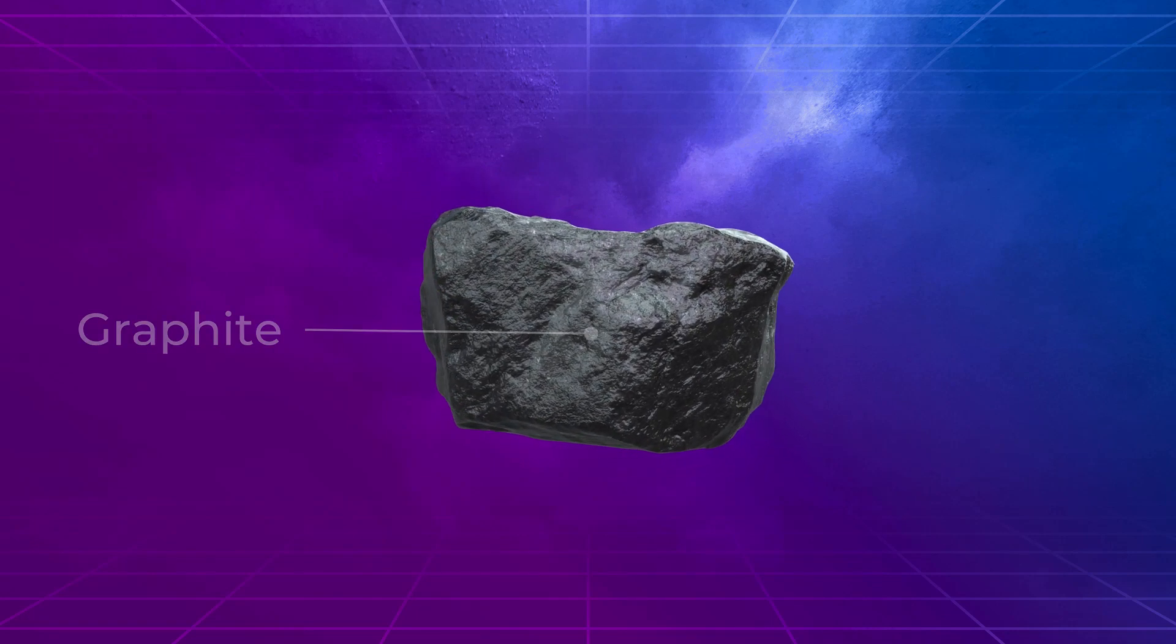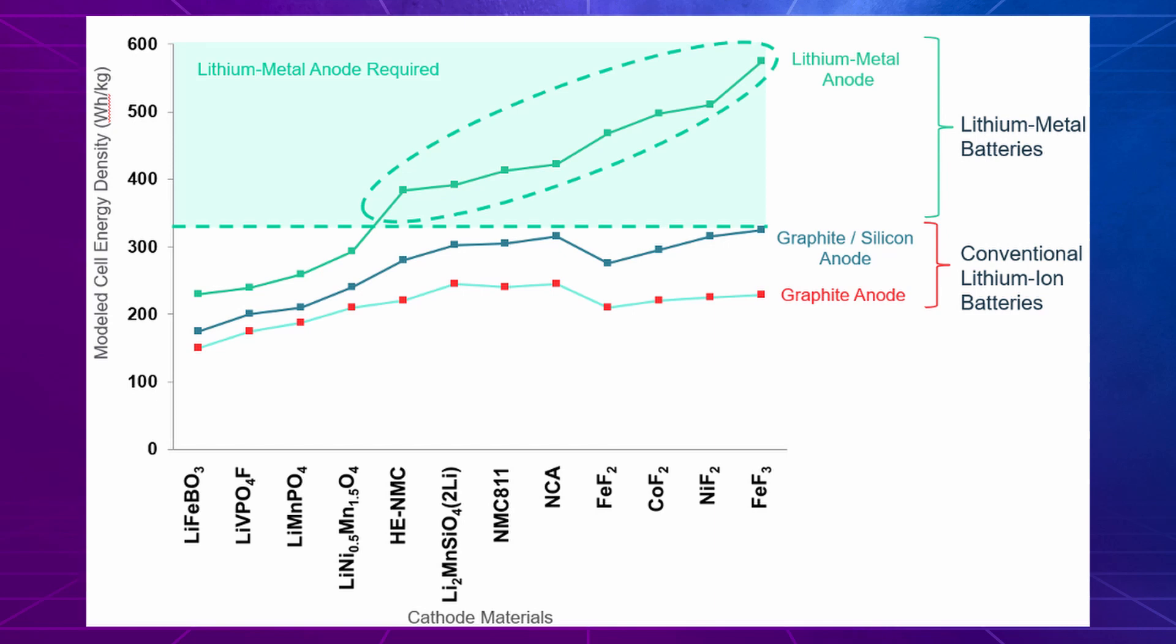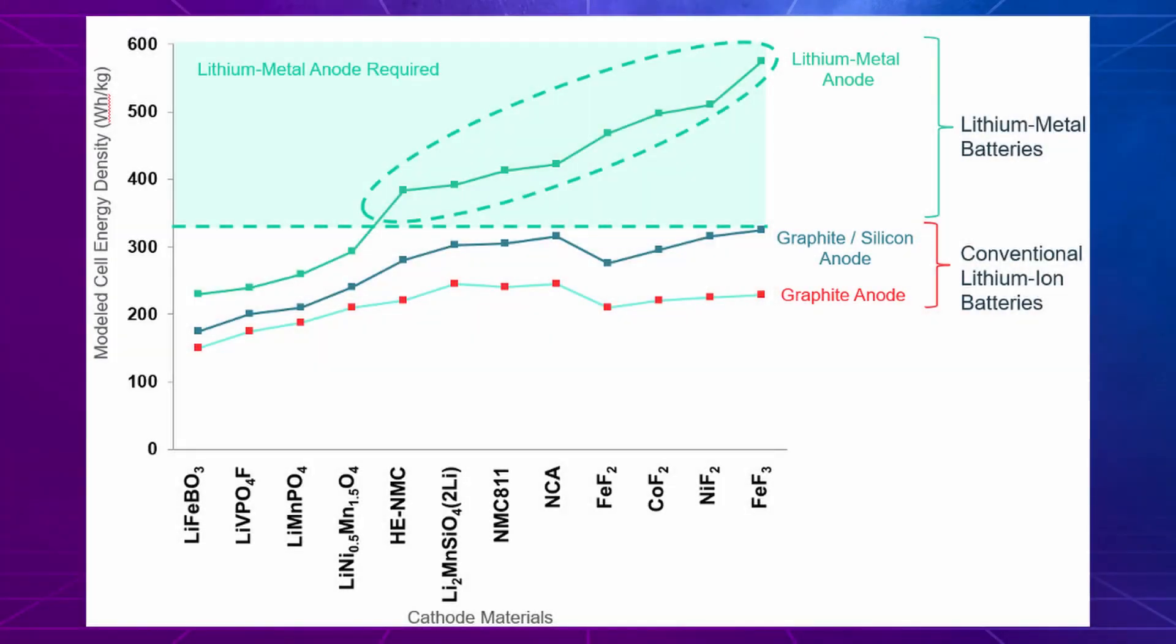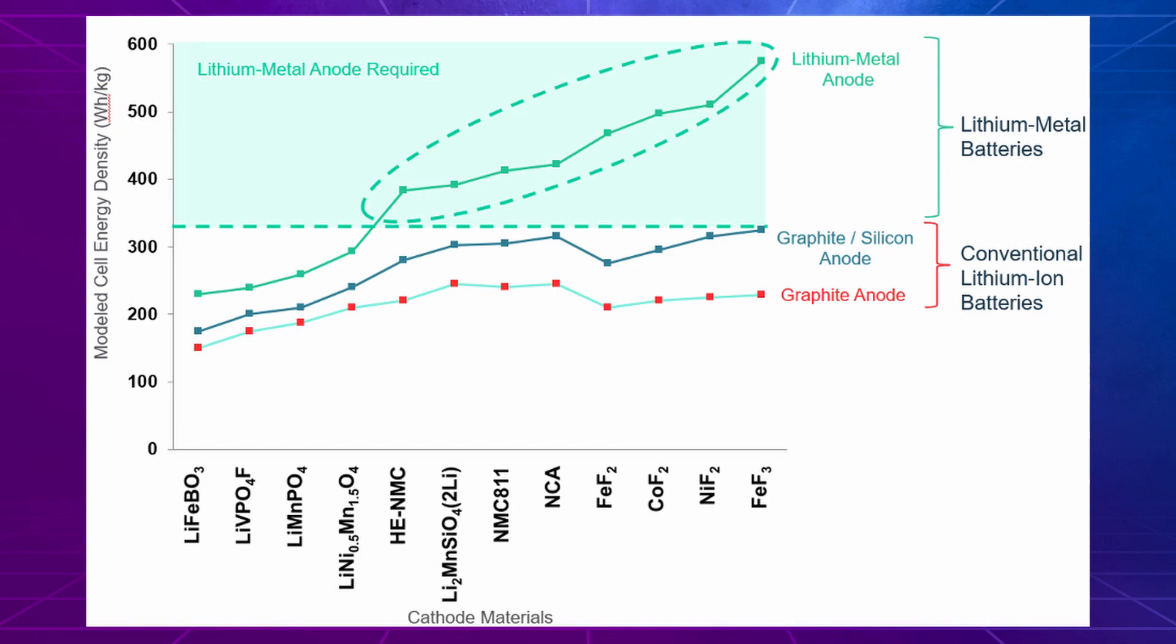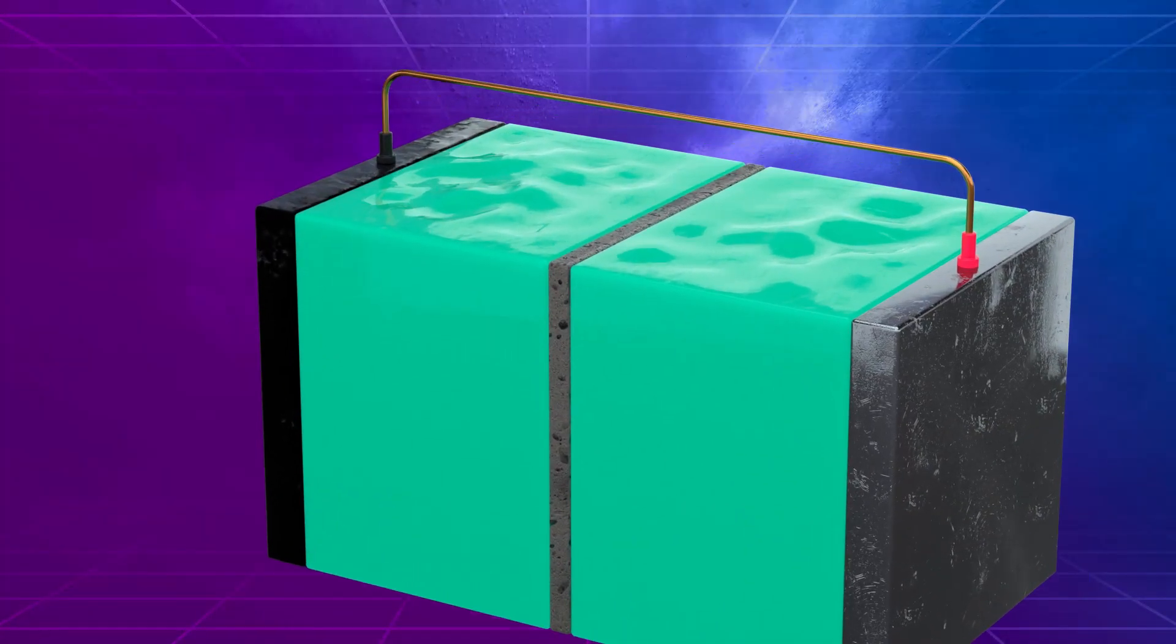A paper published by a group from BMW includes a chart showing a dozen different next-generation cathode materials and three different anode materials. The chart clarifies that the energy density gains from using next-generation cathode materials are limited unless lithium metal is used as the anode.